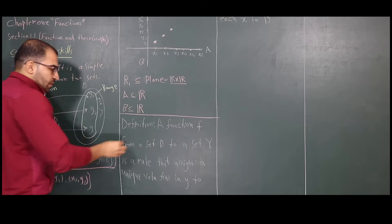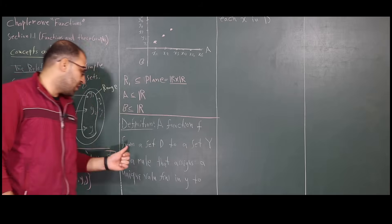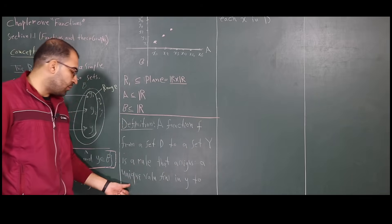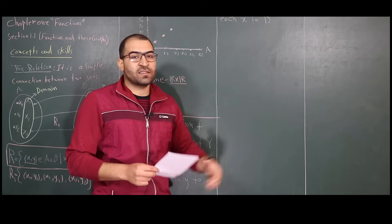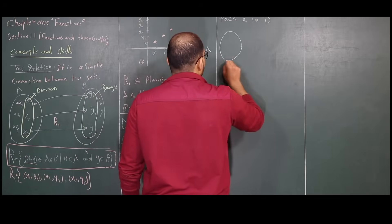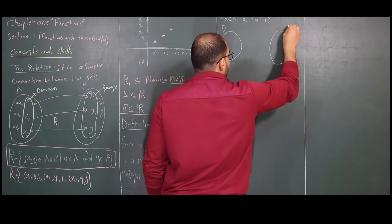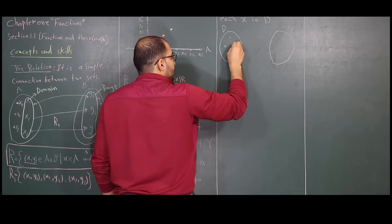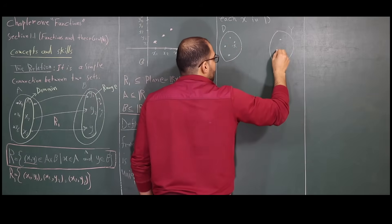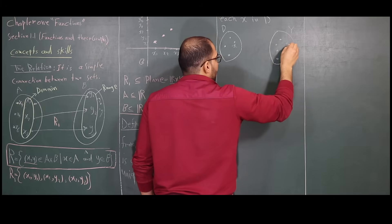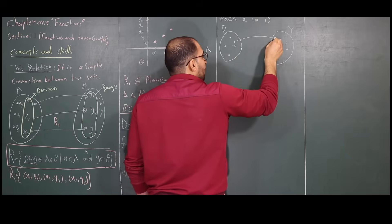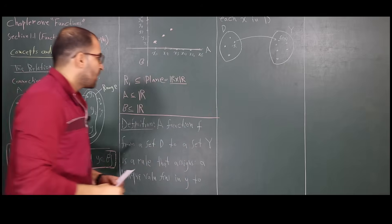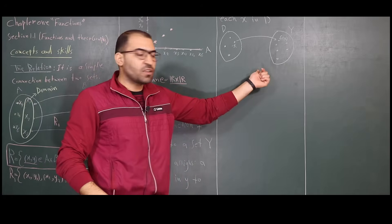Now I'm going to write the definition of a function. A function f from a set D to a set Y is a rule that assigns a unique value in Y to each x in D. So it is a rule: we have the domain D, we have the set Y, and for each element x in D, there is a value f(x). If I apply the rule to x, the result is f(x).